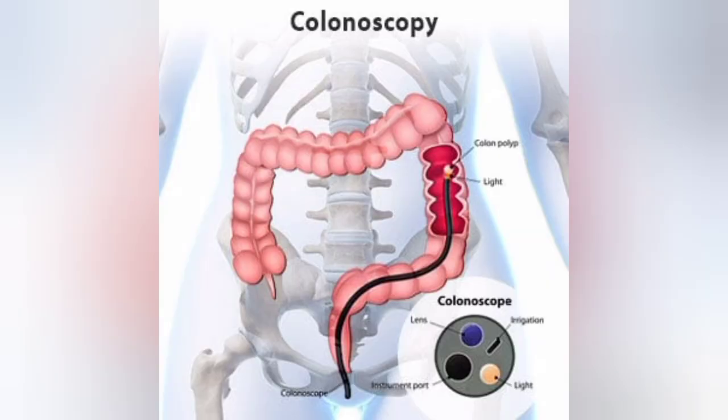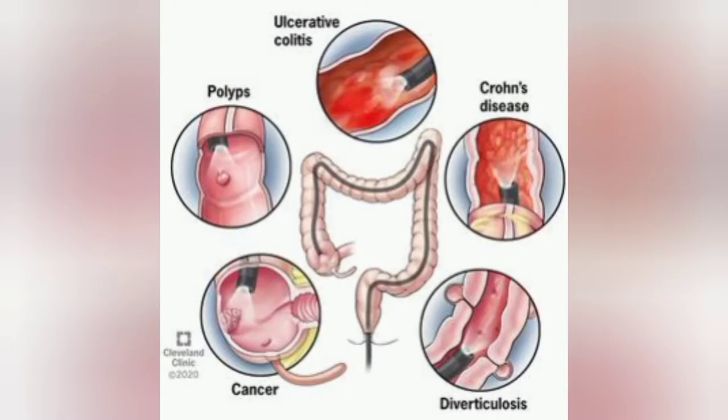Second is colonoscopy, which is used to diagnose problems related to the large intestine and rectum. A flexible colonoscope is inserted into the rectum and can travel through the whole large intestine. It examines changes related to irritable tissue, pain, polyps, swelling, and cancer.